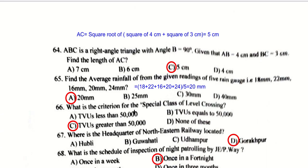In right-angle triangle ABC with angle B = 90°, AB = 4 cm and BC = 3 cm. To find AC (the hypotenuse), use the Pythagorean theorem: AC = √(4² + 3²) = √(16 + 9) = √25 = 5 cm. So option C is the right answer.